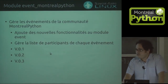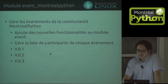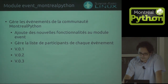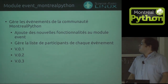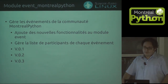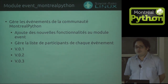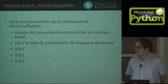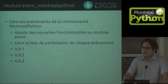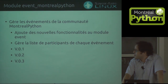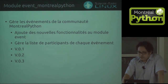What we're going to do now is create a small module to illustrate module development. This module will help manage the Montreal Python events. It's based on the event module - it's a standard module - and we're going to extend it to add functionality. We're going to have three iterations: 0.1, 0.2, and 0.3.